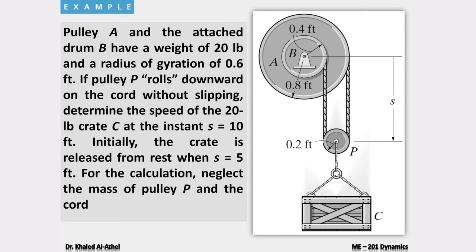For the first problem: pulley A and attached drum B have a weight of 20 pounds and a radius of gyration of 0.6 feet. Pulley P rolls downward on the cord without slipping. Determine the speed of the 20-pound crate C at the instant s = 10 feet. Initially the crate is released from rest when s = 5 feet. Neglect the mass of pulley P and the cord.